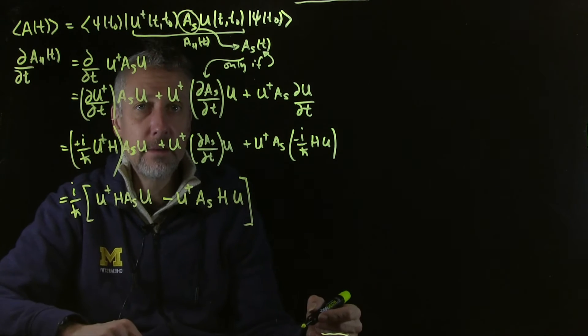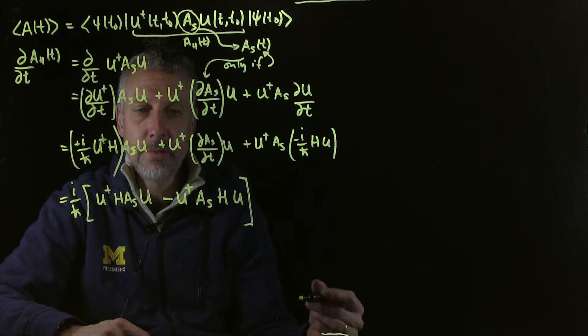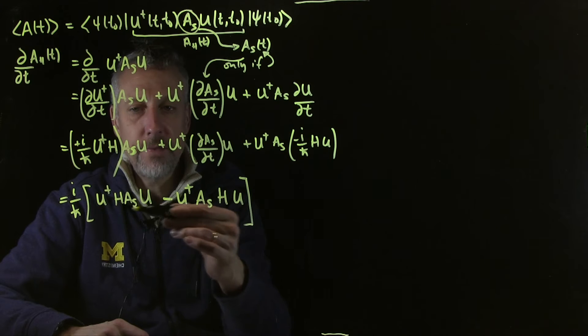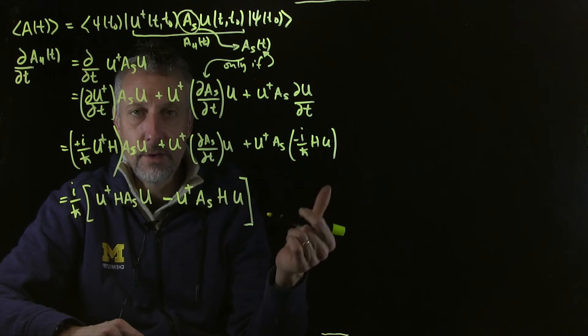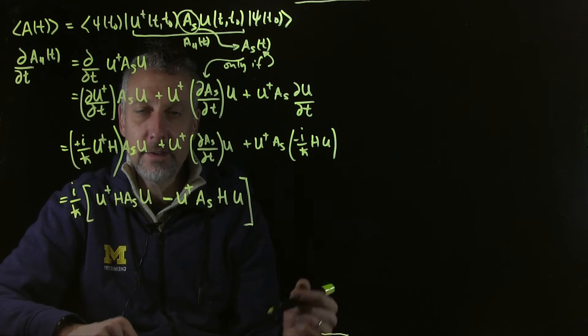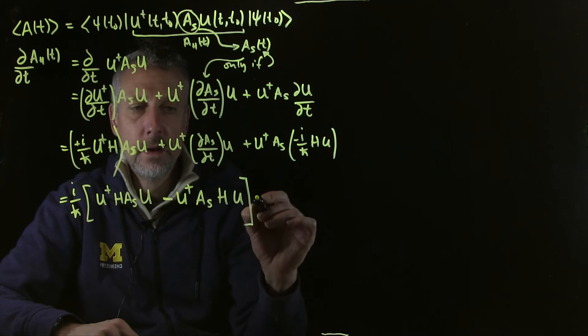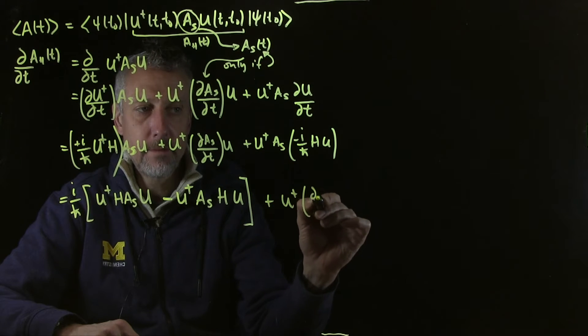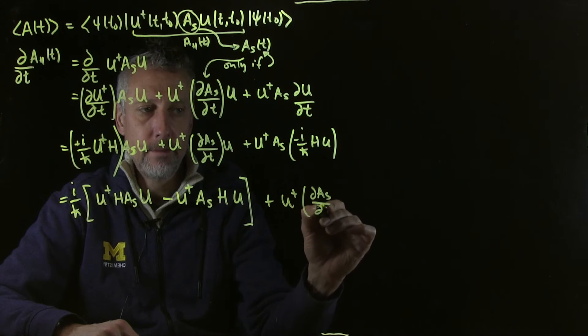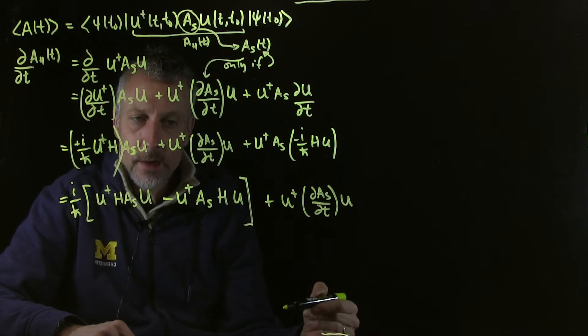So this should look pretty reminiscent of something we saw with the Liouville von Neumann equation. We have a term that looks like itself minus the other ordering. It looks kind of like a commutator. It's not a commutator yet, but you'll see in a minute that we can turn it into one.